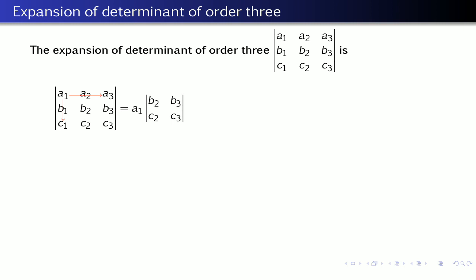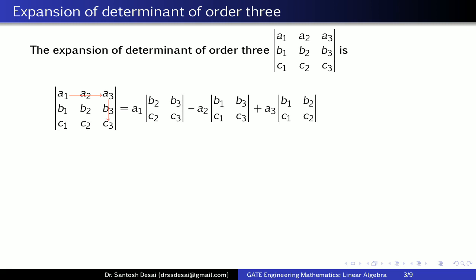The next element is a2, but we remember the signs for the first row: the first sign is plus, next is minus. So I take minus a2. This a2 lies in the first row and second column, so I delete the first row and second column and write remaining as a determinant: b1, b3 and c1, c3. The next sign is plus and the next element is a3, so plus a3. Since a3 lies in the first row and third column, deleting first row and third column gives the remaining determinant: b1, b2 and c1, c2.